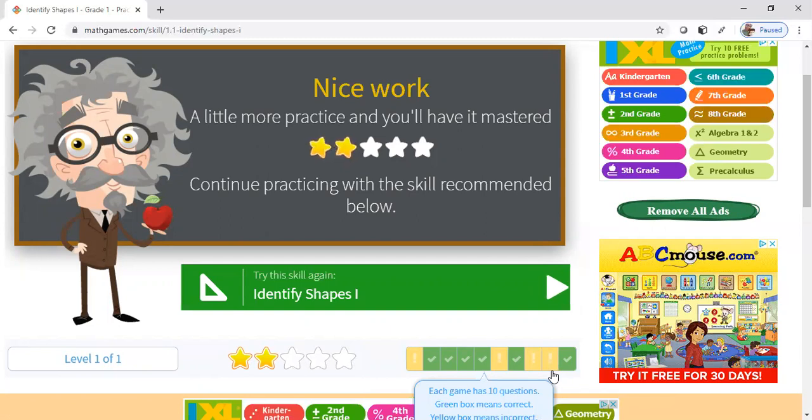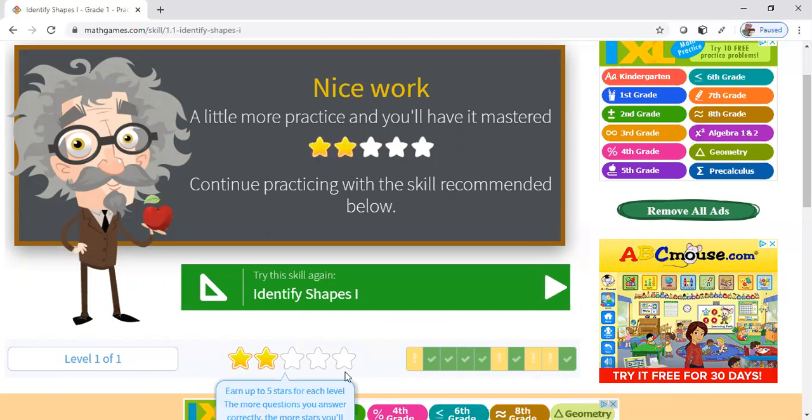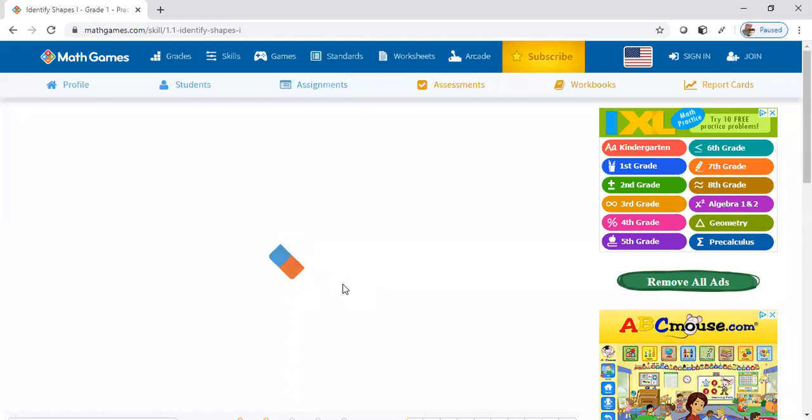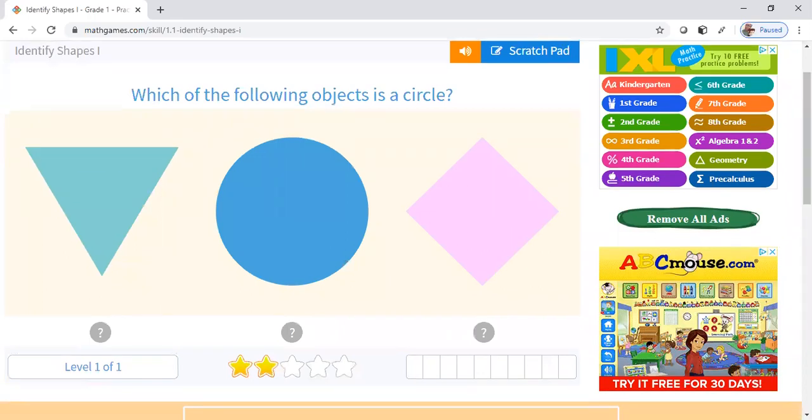So they would do this on each lesson until they have mastered it. And if they have mastered it, then all of these stars would be lit up at the bottom. So it says nice work—a little more practice—and then it moves them to the next skill. So they click on the next skill and it'll keep them on the same skill until they have mastered this skill and they will have, like I said, all the stars lit up at the bottom.